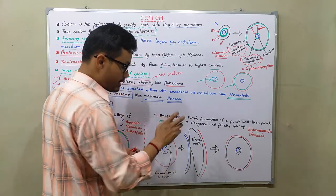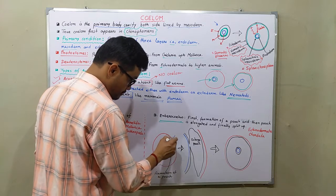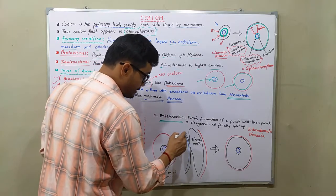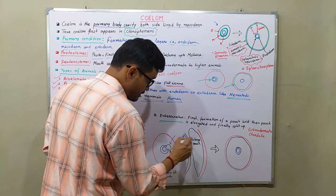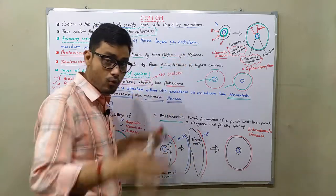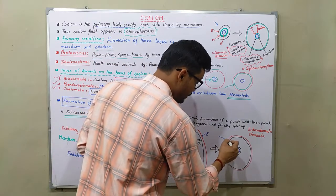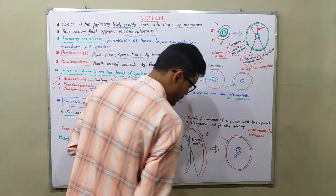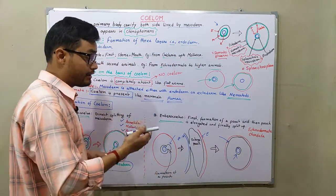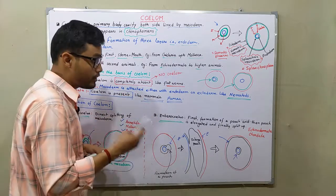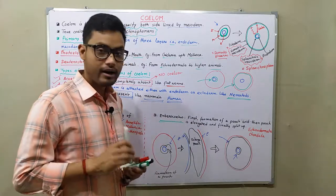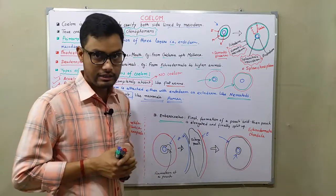In enterocoelous animals, first a pouch is produced from the endoderm. This pouch enlarges and covers the whole area, ultimately splitting and producing somatic mesoderm and splanchnic mesoderm. So by forming a pouch that then splits into mesoderm layers, the coelom is formed. Echinodermata and Chordata are examples of enterocoelous animals.